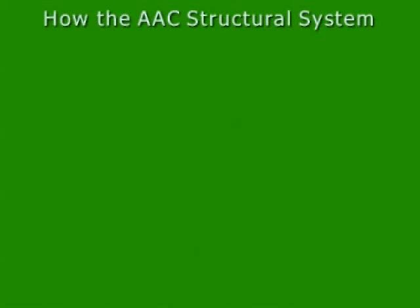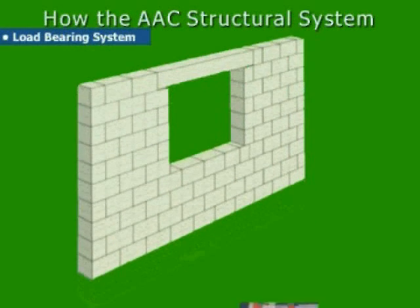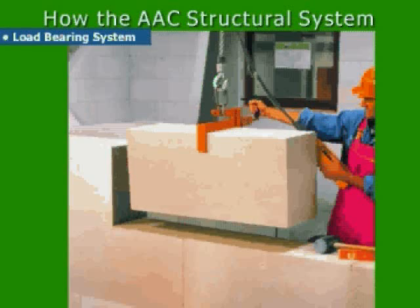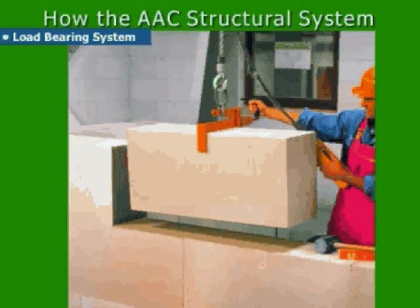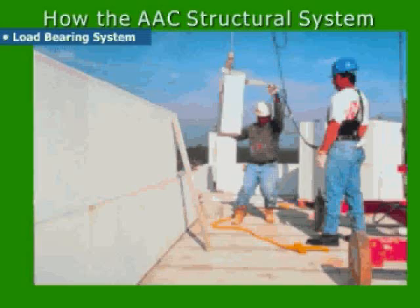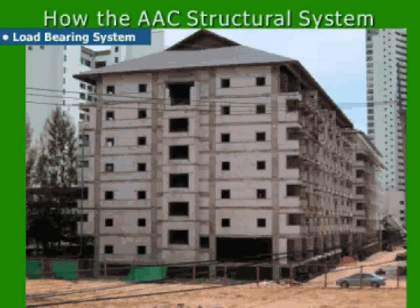So how does our structural system work? We can use standard blocks in sizes of 24-inch long and 8-inch high, with thicknesses in 2-inch increments: 2-inch, 4-inch, 6-inch, 8-inch, 10-inch, and 12-inch thick. Or we can use jumbo blocks, which are 2 feet long and 2 feet high, with the same available thicknesses.